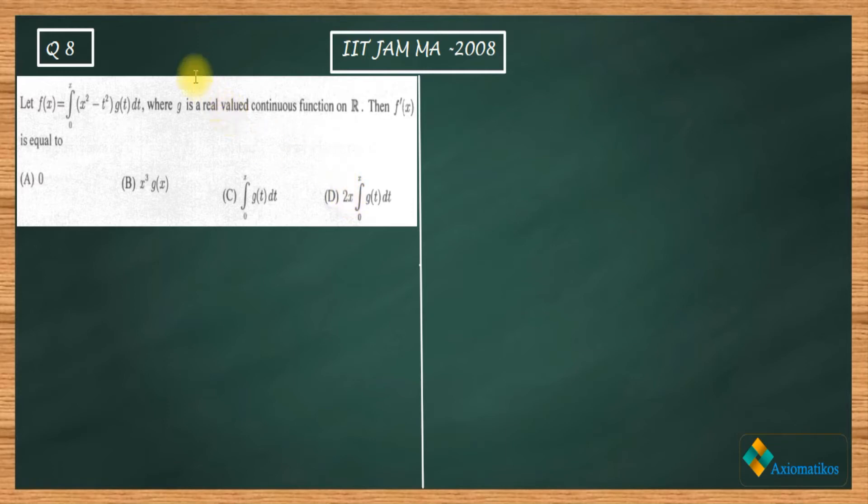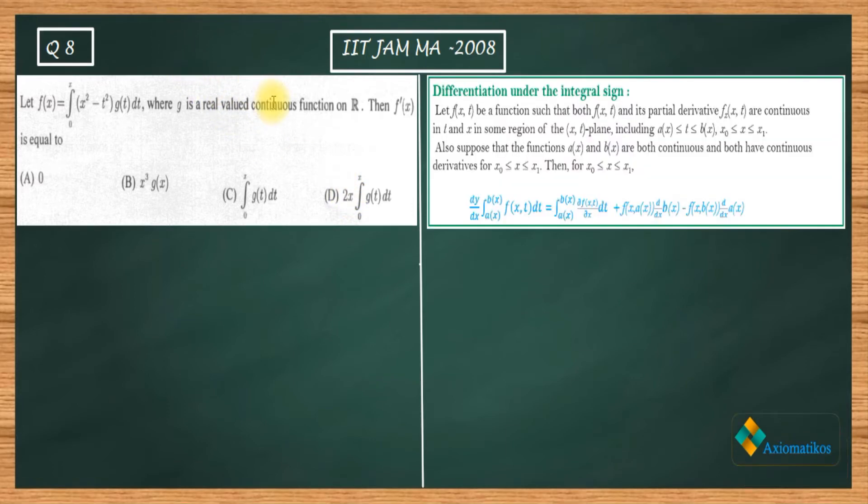So this is the rule. It looks very difficult, but it's not that much difficult. It's very easy. Once you apply this rule, you will remember this formula forever. It's difficult to write, but to remember, it's easy.